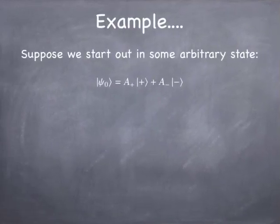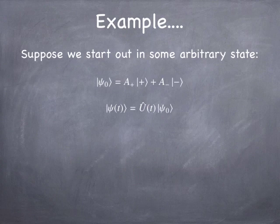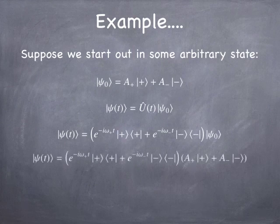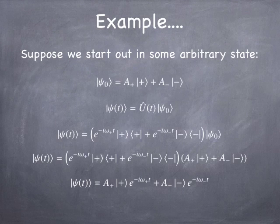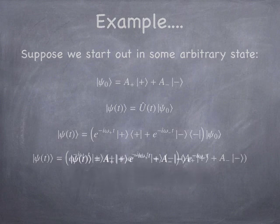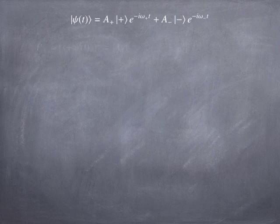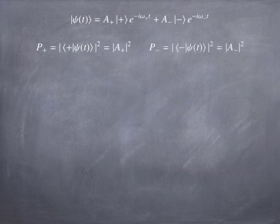Let's see how that works out in practice. Suppose we start with some arbitrary state that's a little bit plus and a little bit minus, and then we ask what the state is going to be at a later point in time. We just apply the time evolution operator to our state — it's the plus component times e to the minus i omega-plus t, plus the minus component times e to the minus i omega-minus t. The probability of measuring plus is just |a-plus|² and the probability of getting minus is just |a-minus|², and those don't depend on time. If energy is the observable you're measuring, you get a time-independent result.